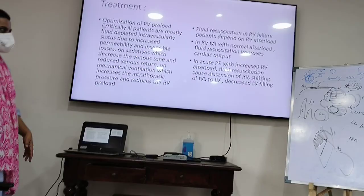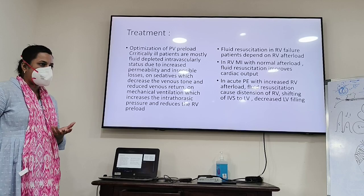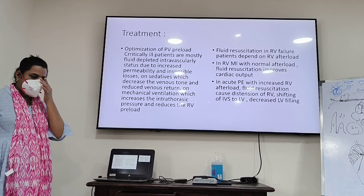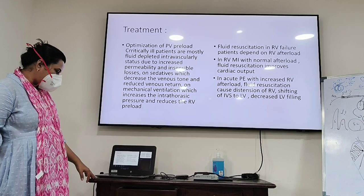In RVMI you may give some fluid, but there is a high possibility the RV will get distended further, causing poor perfusion of the ventricular muscles. Optimization of RV afterload: in critically ill patients, factors that cause pulmonary vascular resistance increase include hypoxia, hypercapnia, and acidosis — try to correct all three. Pulmonary vasodilators act by decreasing pulmonary vascular resistance and increasing RV stroke volume and output. Avoid systemic hypotension and maintain coronary perfusion.